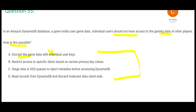Option B says restrict access to specific items based on certain primary key values. Primary key values may be, for example, the username or the user ID. Based on that, we can restrict those items at the database level itself. So this looks correct. Option C says stage data in SQS queues to inject metadata before accessing. You can use an SQS queue to pass data from a frontend to DynamoDB, but metadata injection will not help with isolating a user's data. The solution in C is incomplete — it does not explain how it satisfies the requirement. Hence C is wrong.